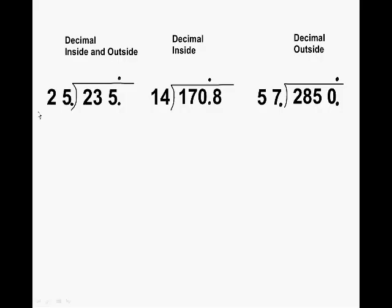So going back to our first example, we know that we can fit 9 groups of 25 into 235. That product gives us 225. Then we subtract and we get a difference of 10. Now we still have a remainder.